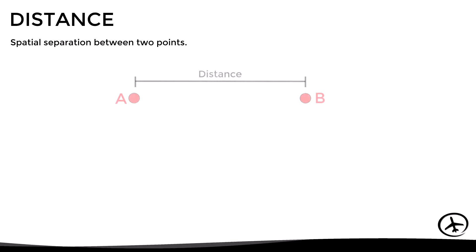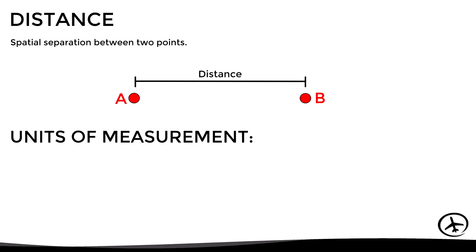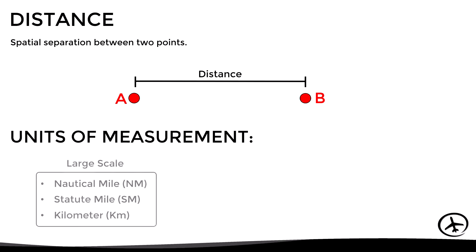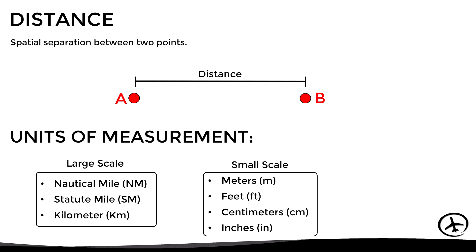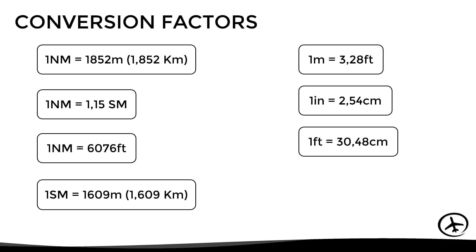Distance is defined as the spatial separation between two points, and there are several units of measurement on small and large scales. For long distances we normally use nautical miles, statute miles, or kilometers, while for shorter distances we can use meters, feet, centimeters, or inches. Here we can see the most commonly used conversion factors between these units of measurement.